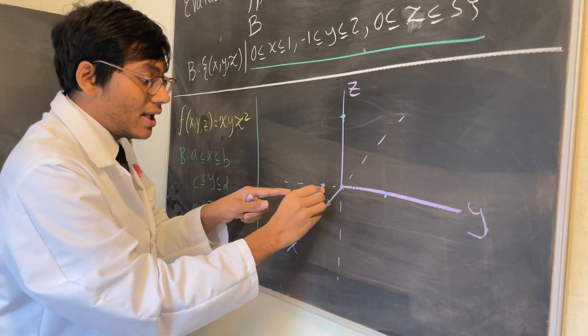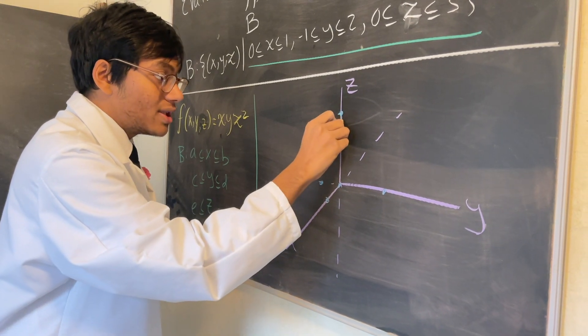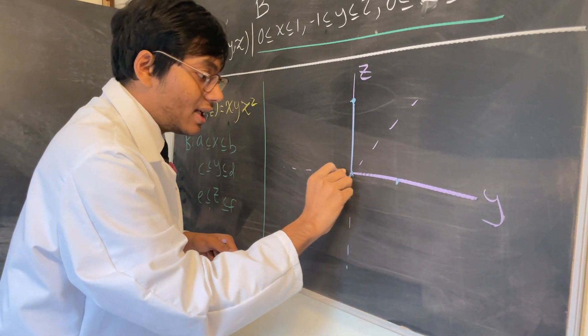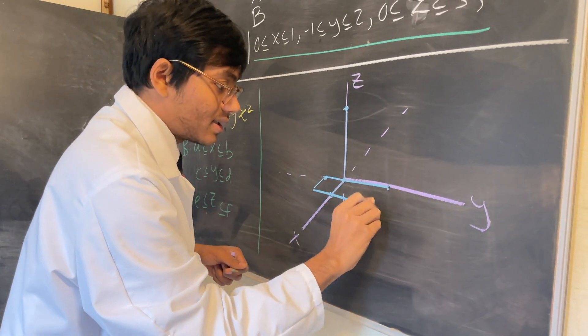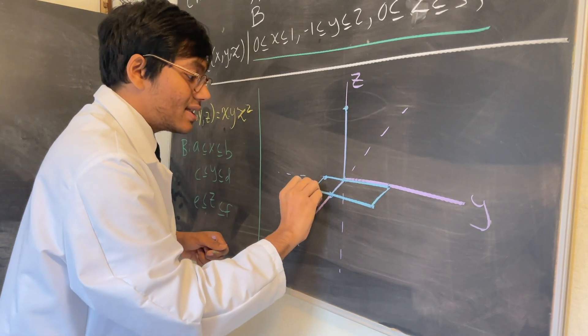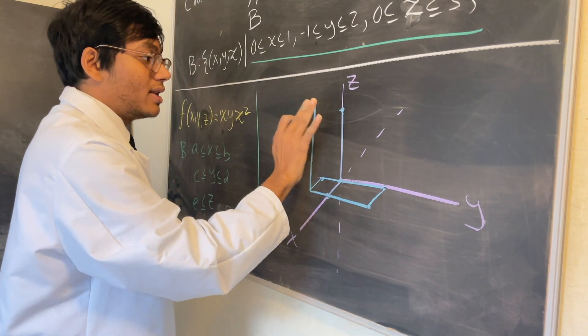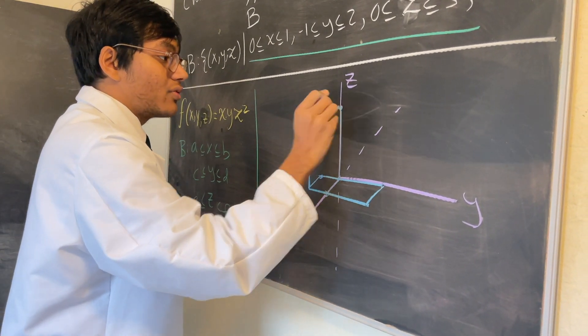If you look carefully, you're getting a rectangular prism. If I connect all of these dots, I'm going to end up with something that looks like this. This is the region that we're integrating over, this is the volume that we're integrating over.